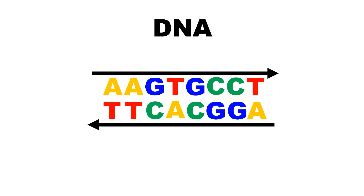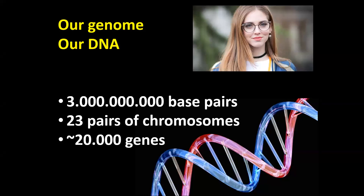So let's imagine now that instead of editing phrases, we could edit our genome, our DNA. Remember the DNA is a double helix in which each strand has many letters. But these letters are of only four types: A's, T's, G's and C's. A always lies in front of a T and G always lies in front of a C. How many of these letters do we have in our genome? In each of our cells we have 3,000 million base pairs — what our U.S. colleagues would call 3 billion base pairs. These are distributed in 23 pairs of chromosomes and all together they include roughly around 20,000 genes.